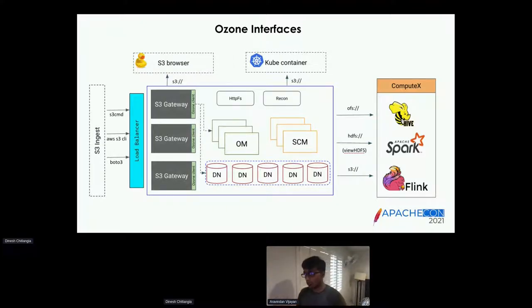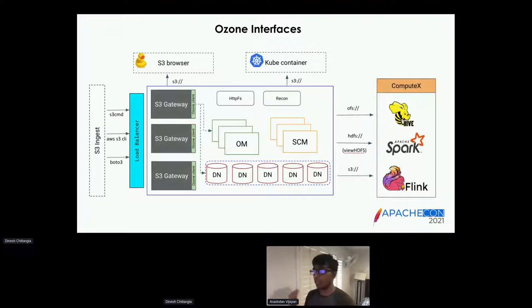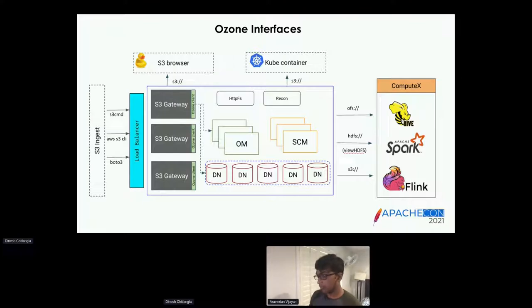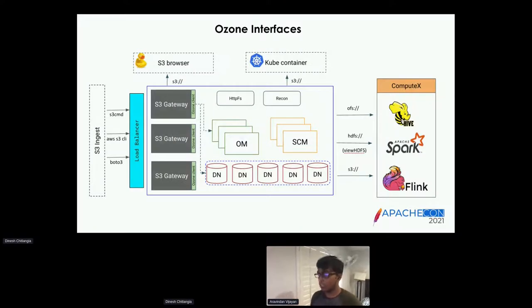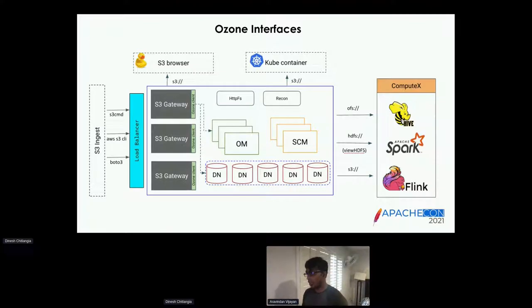Since Ozone has multi-protocol support — S3, native object store, and Hadoop-compatible file system — it can also work with HTTPFS. Since it provides a Hadoop-compatible file system, analytic applications and engines like Spark, Hive, Impala, and Yarn can work against Ozone seamlessly. The OFS stands for the Ozone File System.